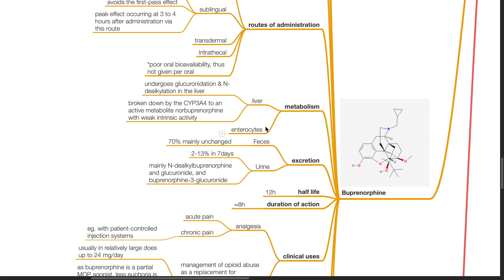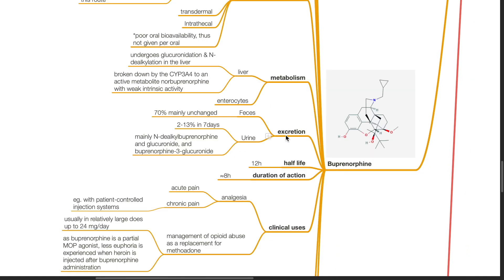Buprenorphine is metabolized in the liver. It undergoes glucuronidation and N-dealkylation in the liver. It is broken down by CYP3A4 to an active metabolite norbuprenorphine with weak intrinsic activity. It is also metabolized in the enterocytes. Excretion: 70% of buprenorphine is excreted unchanged in the feces. 2 to 13% of metabolites is found in the urine at 7 days, mainly consisting of N-dealkyl buprenorphine and glucuronide and buprenorphine-3-glucuronide.